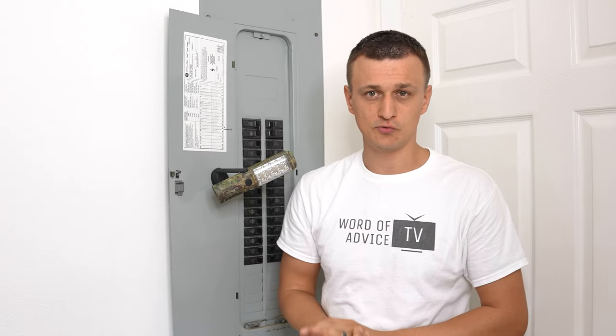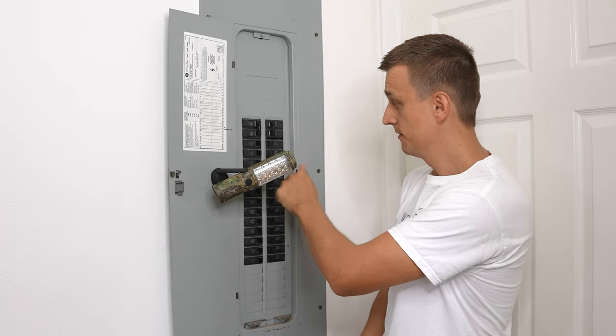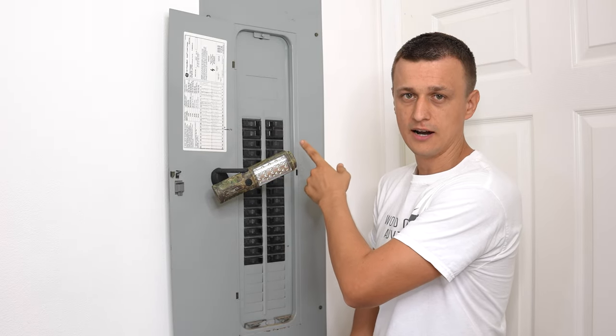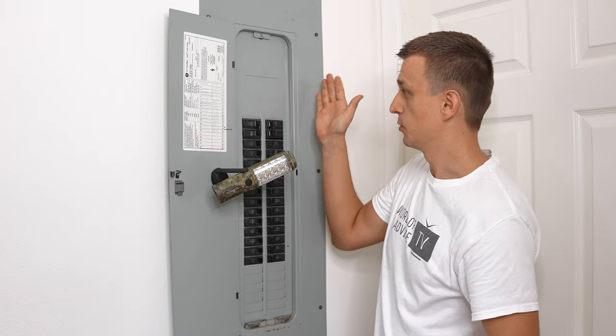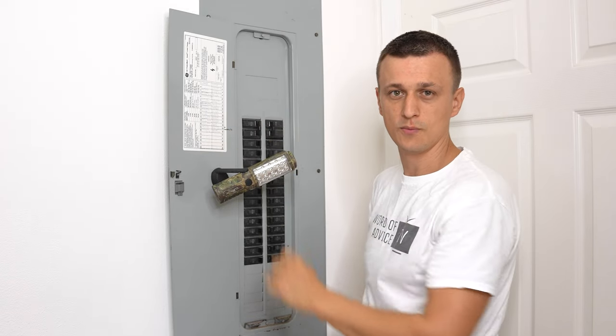In fact, many electricians recommend turning off all your breakers one by one before you turn the main breaker off. And then when you're turning it back on, do the reverse. So first you would turn it on and then you would turn all the small breakers on one by one.